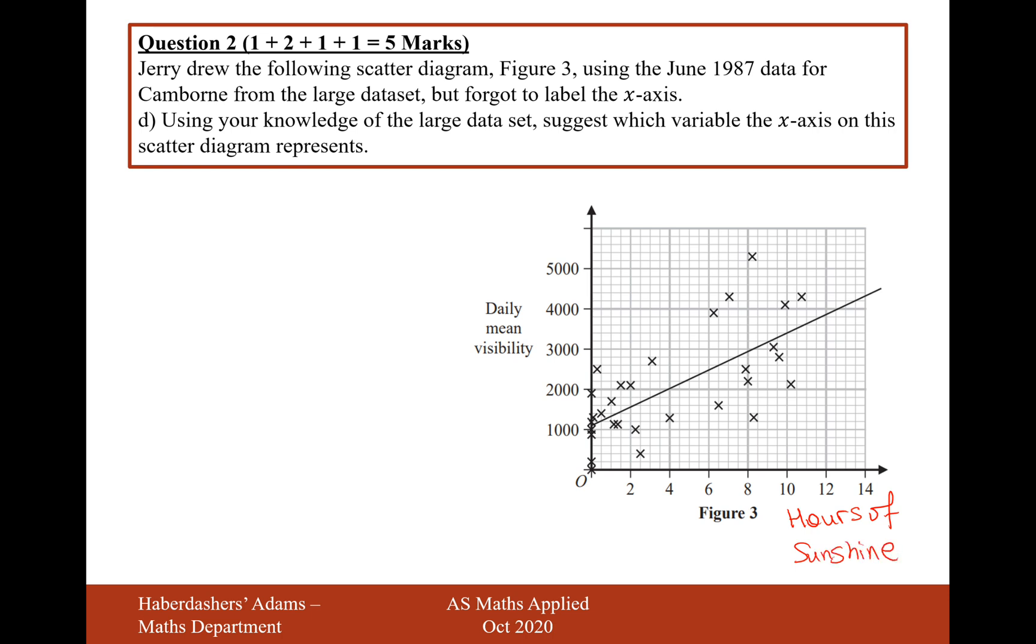I would say daily total rainfall is a possibility, but I would probably say that is negatively correlated with daily mean visibility. If it's raining, it's generally not clear. But if it's sunny, then it's probably going to be quite visible as well. So therefore, I've got a positive correlation there. So hours of sunshine is the answer to that question there. So yeah, that's the answer for question two. Let's now move on to question three.